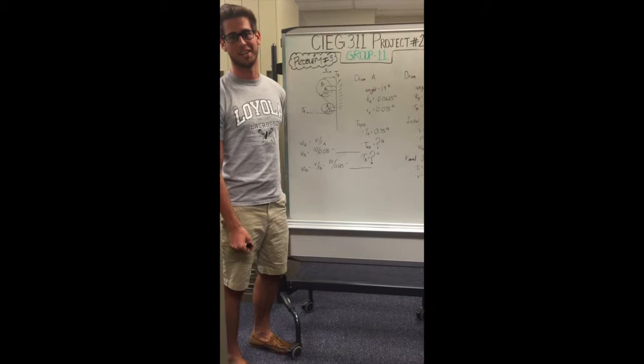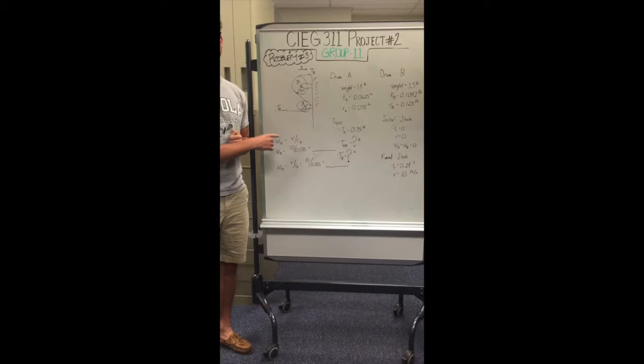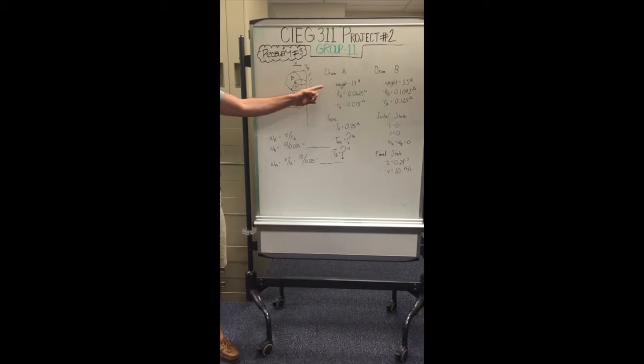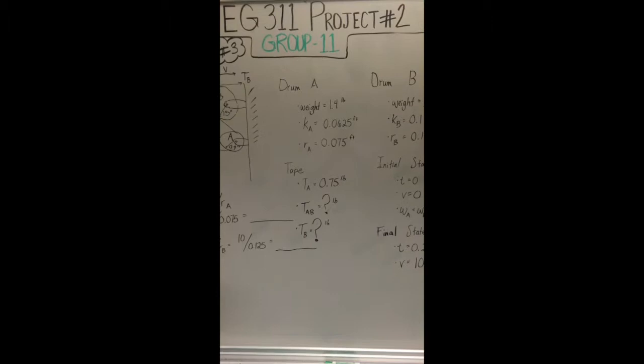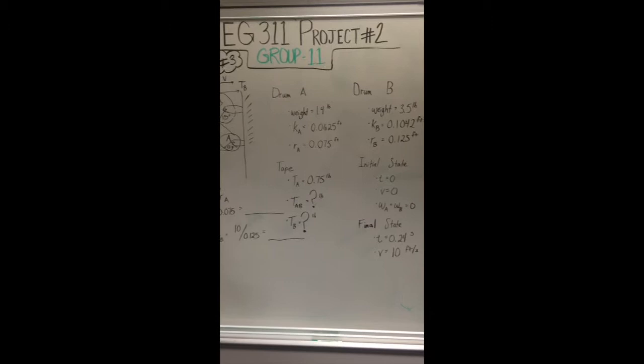For our project, we had two drums with a tape lined between them. The given variables for the drums are here. Drum A, the lower drum, had a weight of 1.4 pounds. The radius of gyration was 0.0625 feet and the radius of the drum was 0.075 feet.